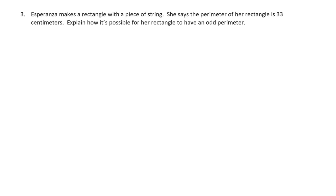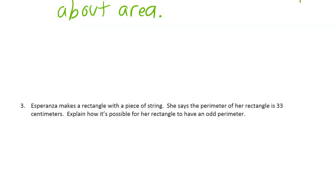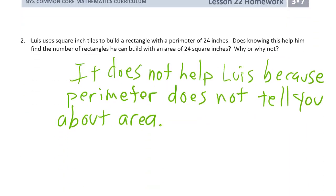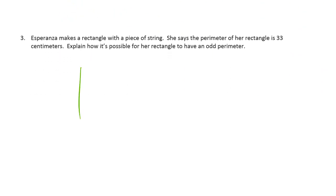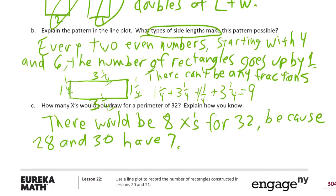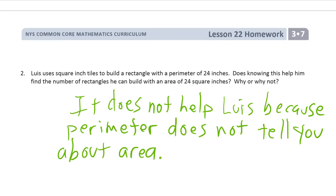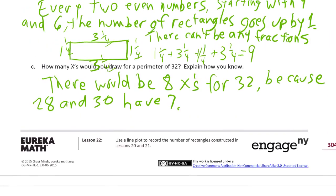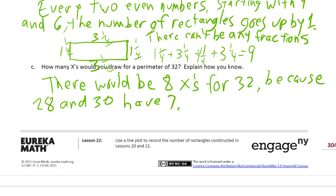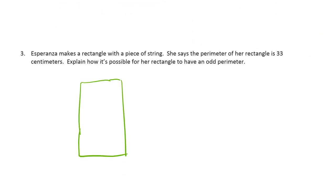Esperanza makes a rectangle with a piece of string. She says the perimeter of her rectangle is 33 centimeters. Explain how it's possible for her rectangle to have an odd perimeter. We went into this on the first page — there's going to have to be a fraction. We need a rectangle that's going to add up to 33. The odd perimeter means we've got to have quarter-length units — these are centimeters for this problem. You're going to have to have a quarter of a centimeter added to sides that give a perimeter of 32, because then the four quarters will add up to one more.